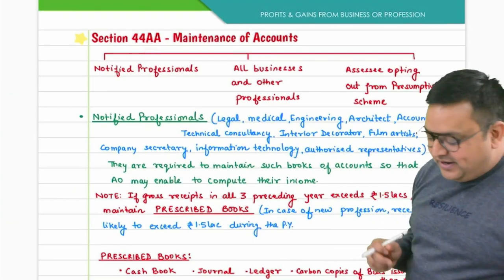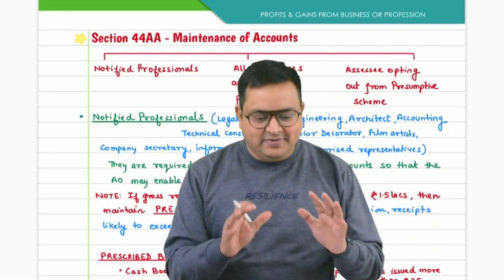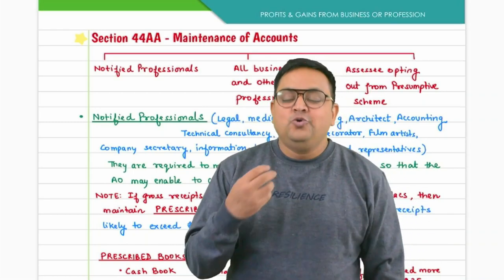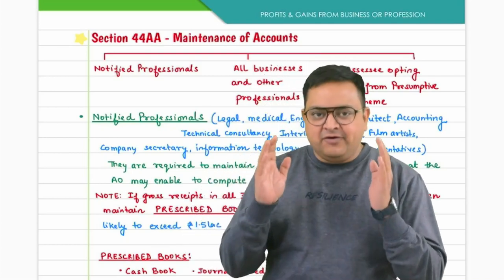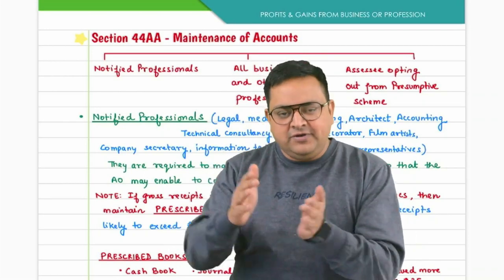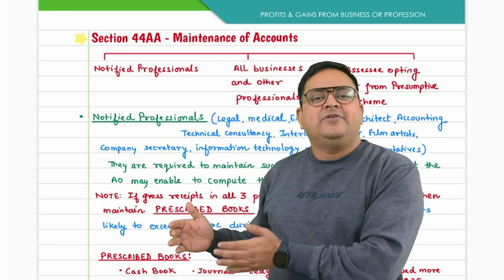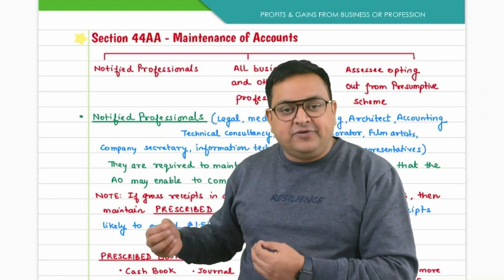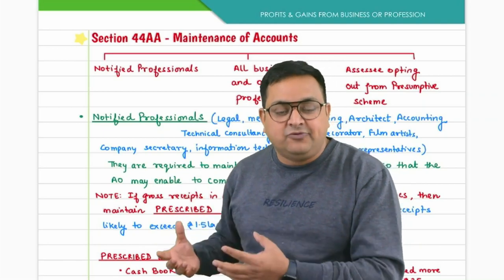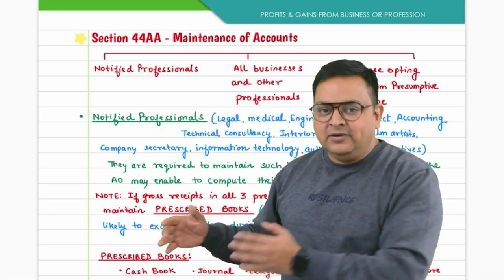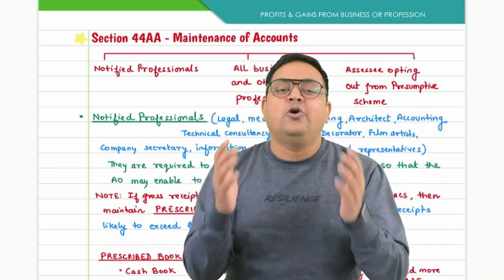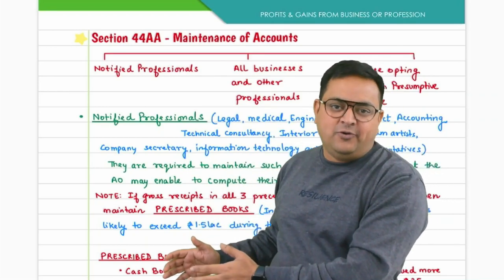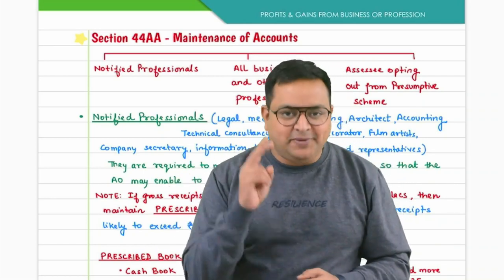Next is Section 44AA, a very important section both for examination and practical purposes. It addresses who is required to maintain books of accounts. We form two groups. The first group is notified professionals, which includes persons carrying medical (doctors), legal (lawyers), accounting (Chartered Accountants, Cost Accountants, Company Secretaries), film artists, and IT professionals. These are notified professions.